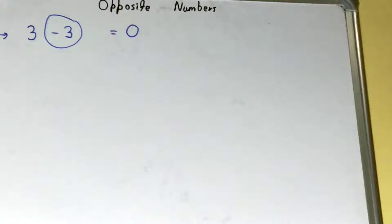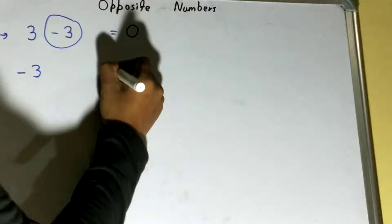We can subtract 3, right? Then the result will be 0. So the opposite number of 3 will be minus 3.